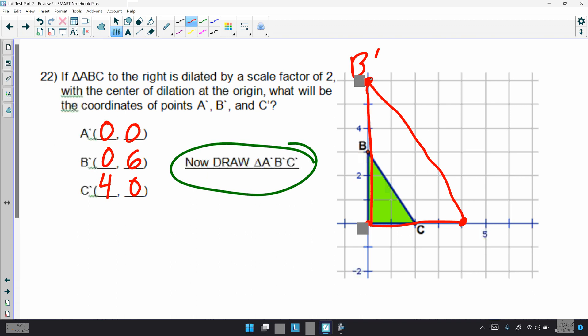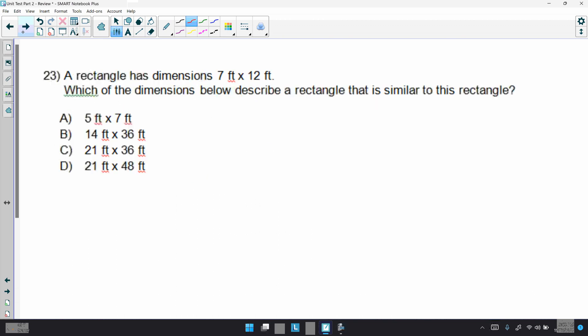A rectangle has dimensions 7 by 12 feet. Which of the dimensions below describe the rectangle that is similar to the rectangle? In class, we got in a huge argument, but if you would notice, C, both of those dimensions are being multiplied by 3. 7 times 3 is 21, and 12 times 3 is 36. We got in an argument in class because this one is only by a scale factor of 3, while this 48 means it would have had a scale factor of 4. They're not the same. This is why D is not the answer. Same can be said about B. It was 2 and 3. That's not going to work either. And, well, A is just far-fetched. So, C is the one that makes the most sense.